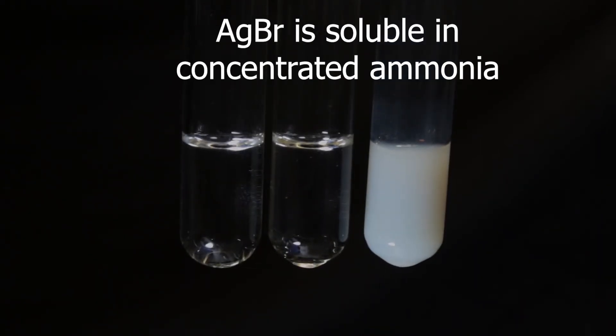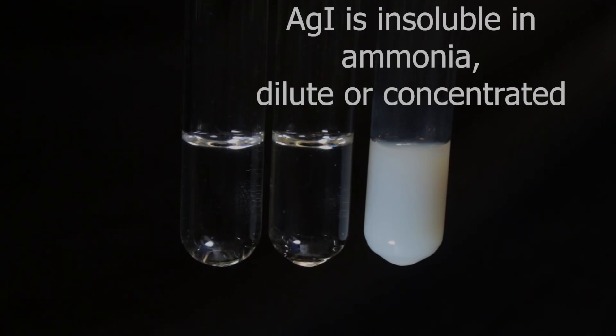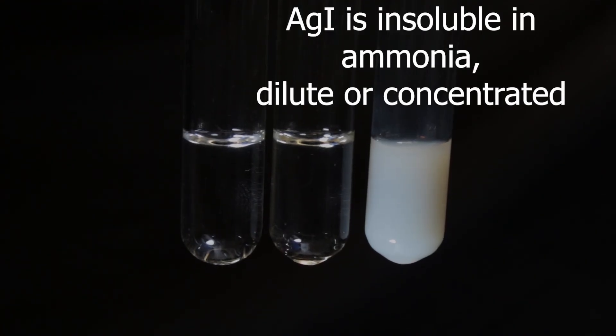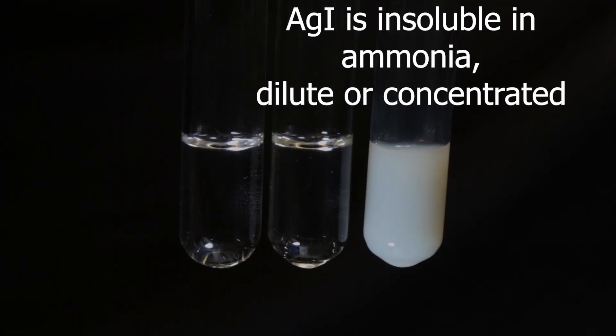There is no effect on silver iodide. Silver iodide is not soluble in ammonia at all. That's how we distinguish the precipitates.